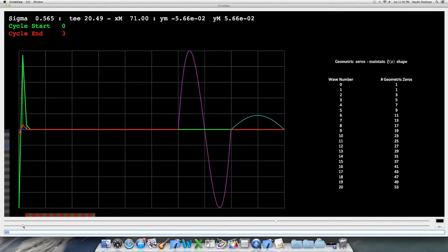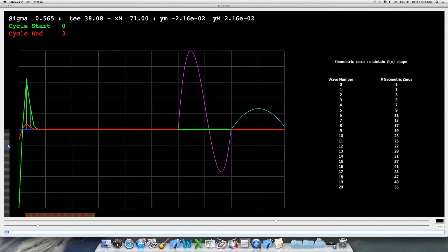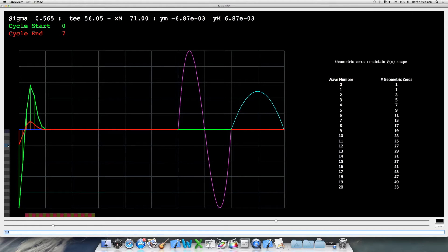We start with three wave functions and start increasing t. When it moves out of shape, we increase the number of wave functions and keep increasing t. The pattern is that the number of geometric zeros covered by n wave functions is the nth prime or prime power, as in the columns on the right.